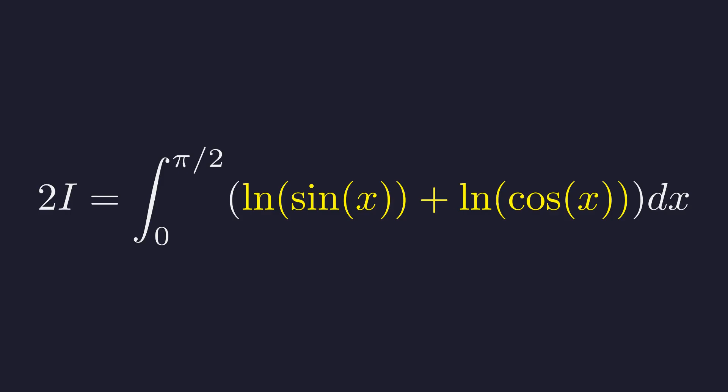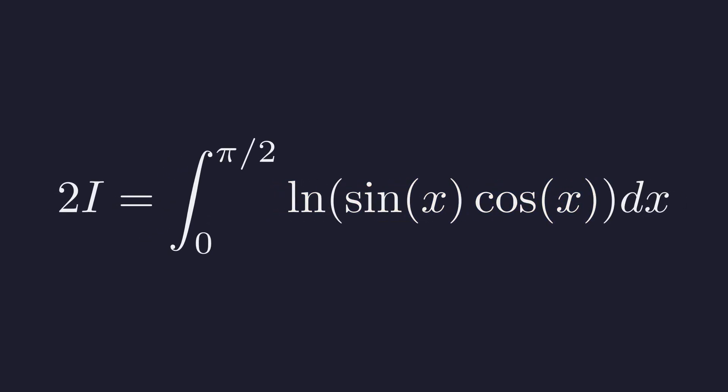Now we use the logarithm property that states the sum of logs is the log of the product. This simplifies our integrand to the natural log of sine of x times cosine of x. This expression is very close to the double angle identity for sine.